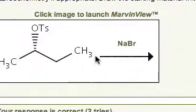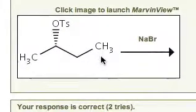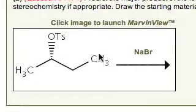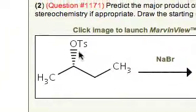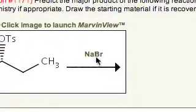Okay, we're going to take a tosylate, so we've got a secondary tosylate, and according to the reaction we're adding sodium bromide. This looks like an SN2 reaction where we're going to displace the tosylate, the leaving group, with the nucleophile, the bromide ion.